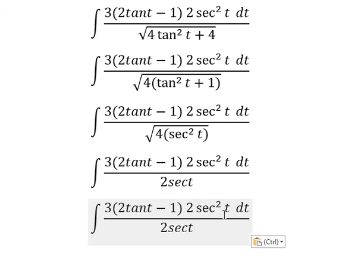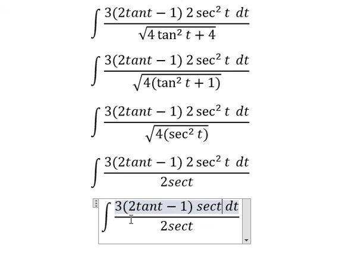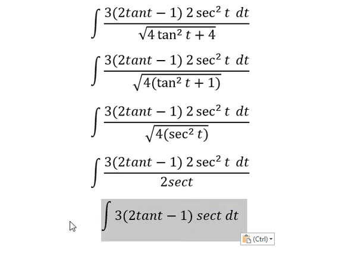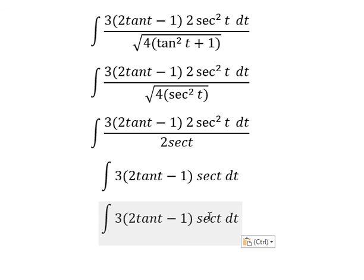Two secant t divided by two secant t gives you secant t. And now secant t multiplied by two secant squared t, working with the coefficients from the numerator.